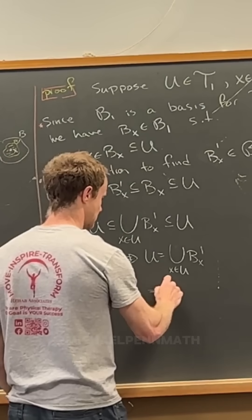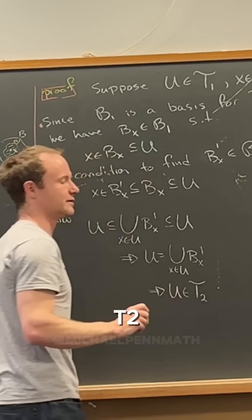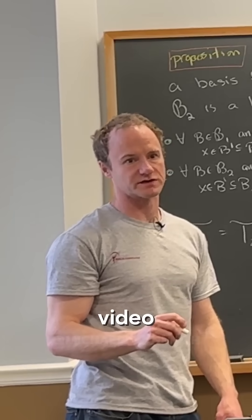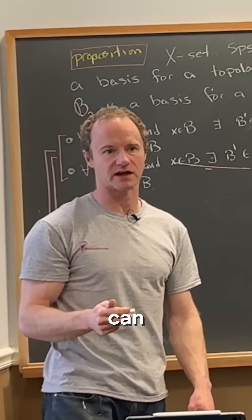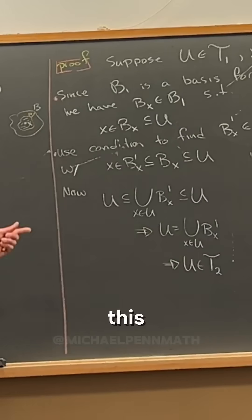But then this tells us that U is an element of T2 because from the video result, something is in a topology if and only if it can be written as a union of elements of the basis. So this can be written as a union of elements of the basis, that means it's in the topology.